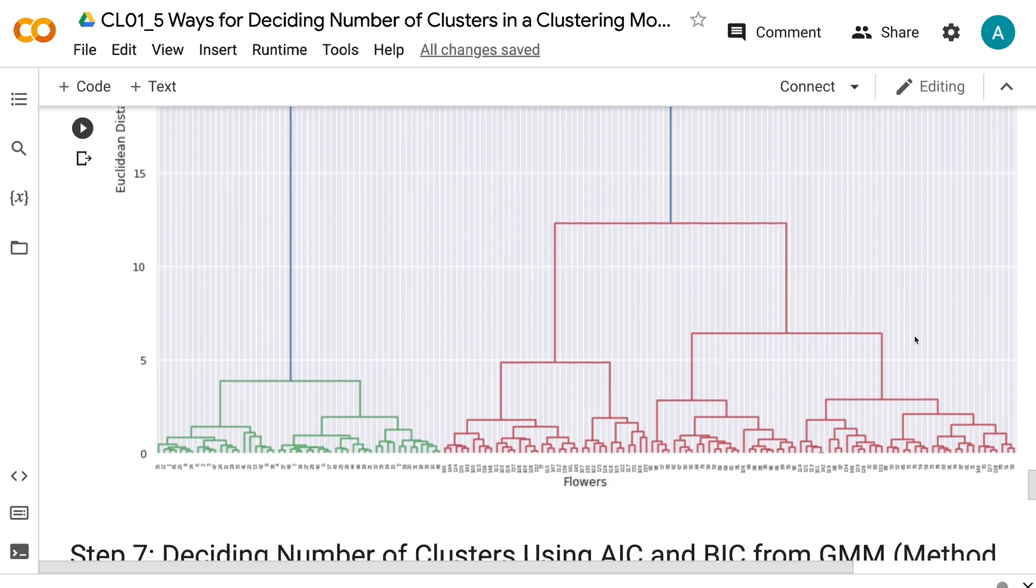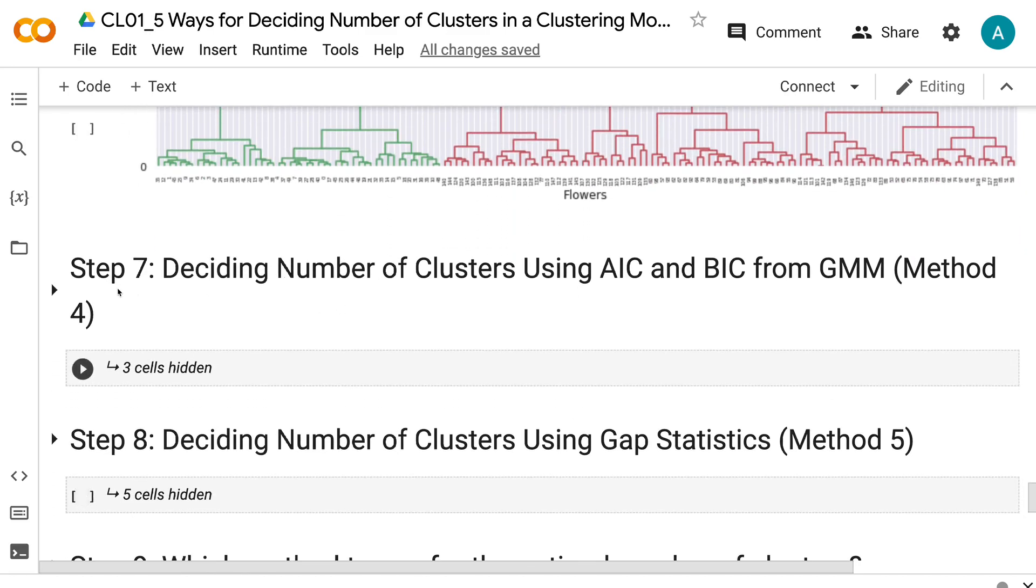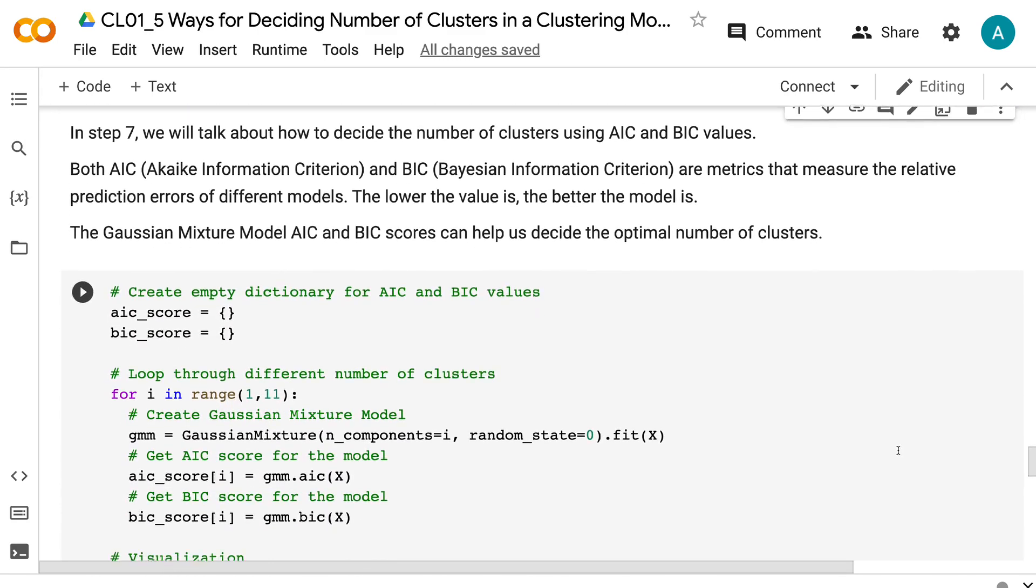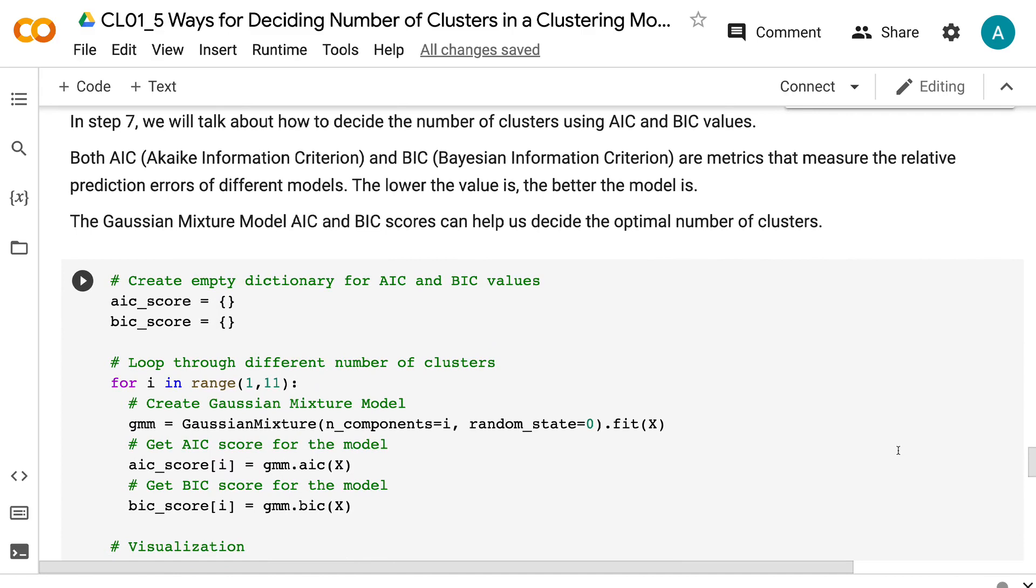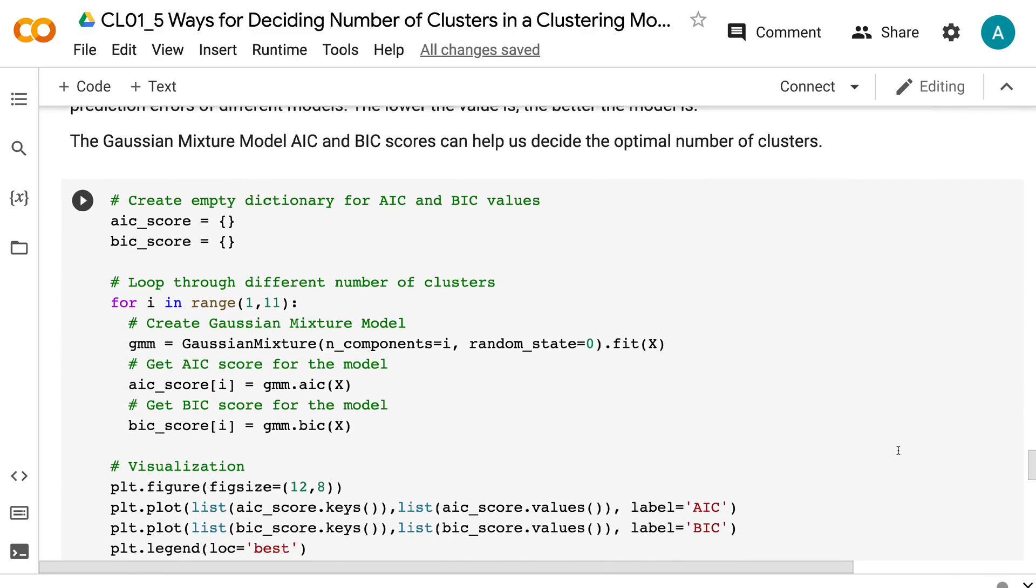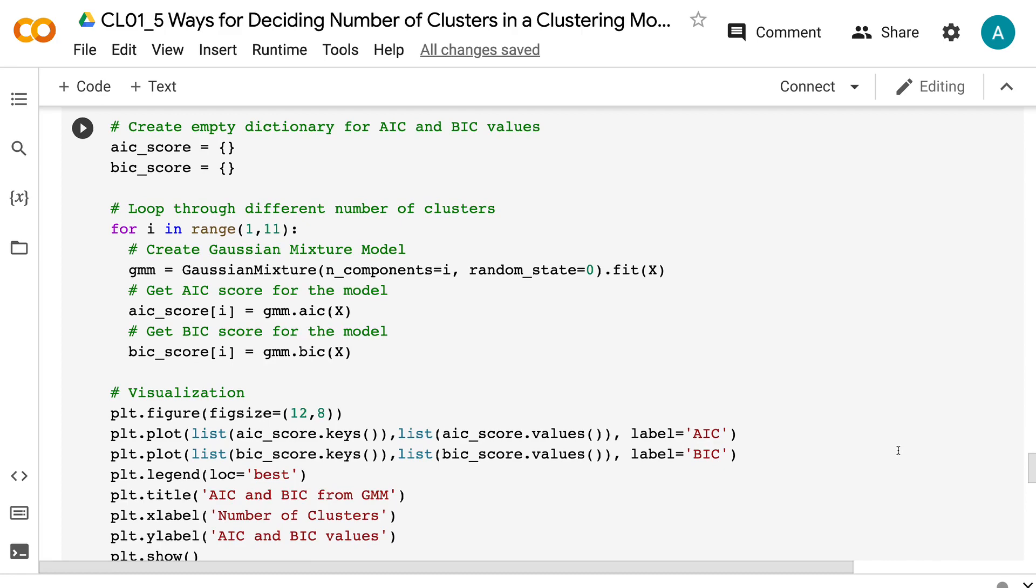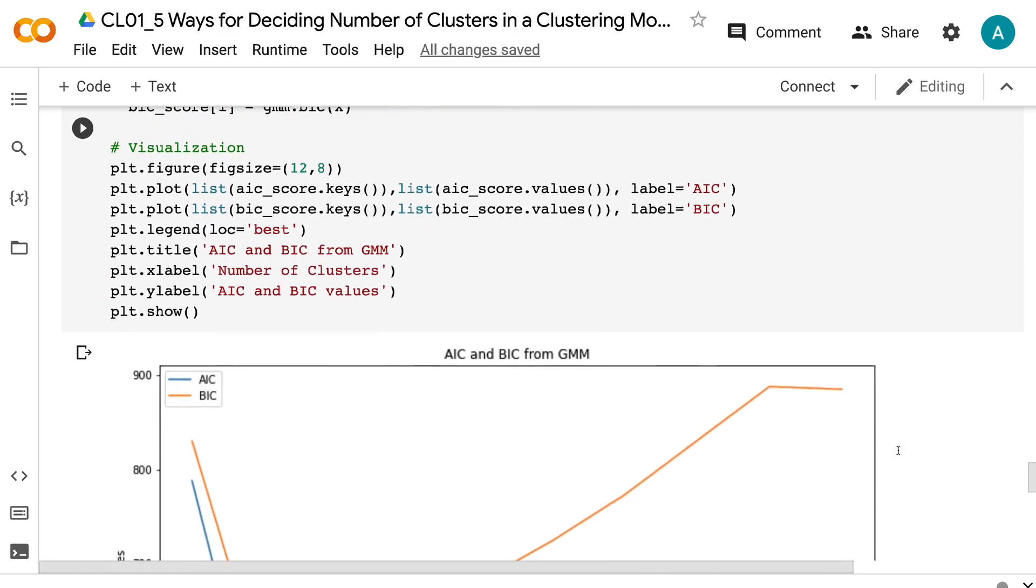In step 7, we will talk about how to decide the number of clusters using AIC and BIC values. Both AIC and BIC are metrics that measure the relative prediction errors of different models. The lower the value is, the better the model is. The Gaussian mixture model AIC and BIC scores can help us decide the optimal number of clusters.